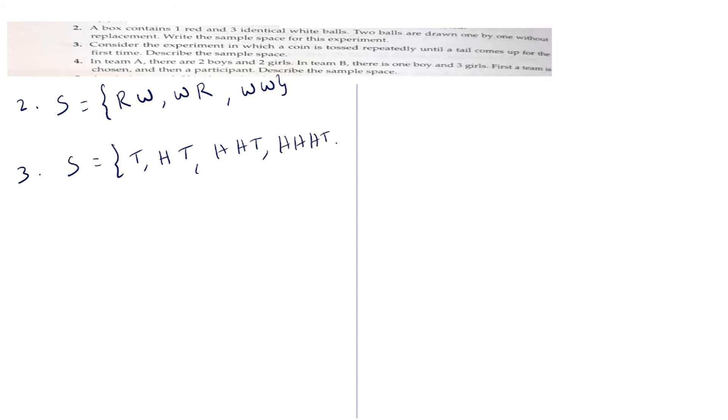Third question: consider the experiment in which a coin is tossed repeatedly until a tail comes up for the first time. Describe the sample space. The coin is tossed until we get a tail. So the sample space will be: tail (T), then head-tail (HT), or head-head-tail (HHT), or head-head-head-tail (HHHT), and so on. This is the sample space for this question.